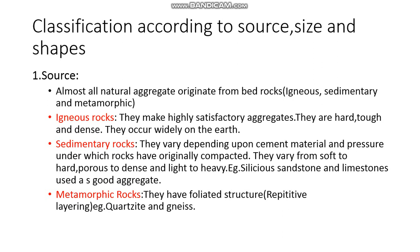Igneous rocks make highly satisfactory aggregates — they are very good for concrete work. They are hard, tough, and dense. Hard means very strong; tough means they do not break easily and can resist impacts very well; and dense means they are heavily and properly packed — not loose. Igneous rocks occur widely and abundantly on earth and can be found easily everywhere.